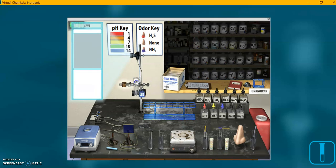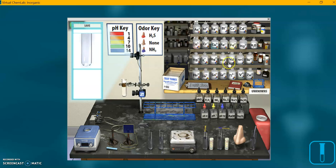I'm going to drag a test tube over to our metal test tube stand and as you see that activates everything. I'm going to put in our ions: cobalt, copper, nickel.